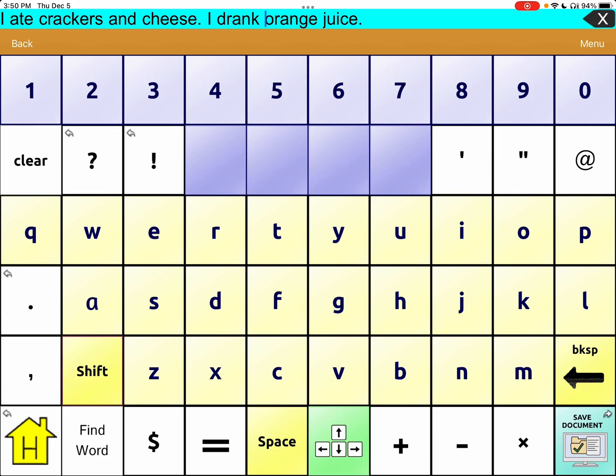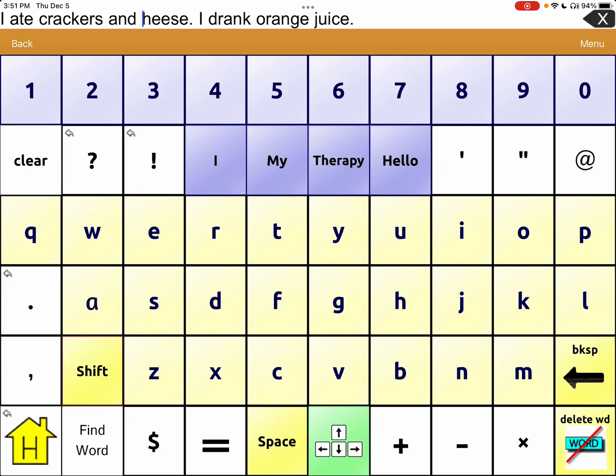Now I can tap wherever I want to put the cursor. I'm going to double tap. I ate crackers and cheese. Whoops. I wanted to. I drank orange juice. I ate crackers and cheese. All right. So I drank orange juice.